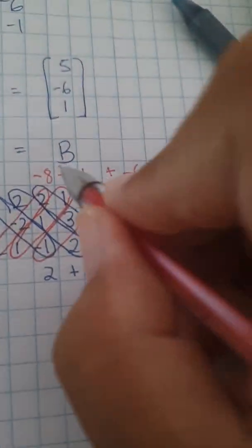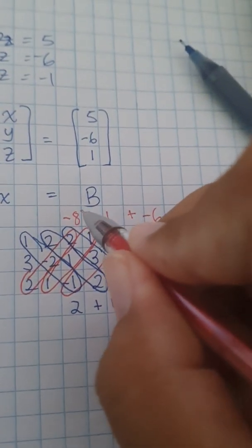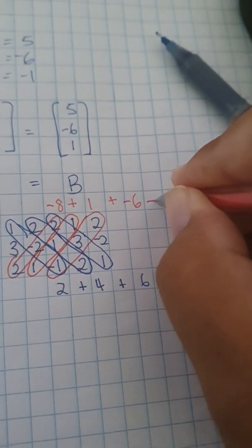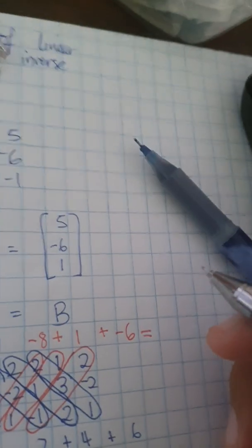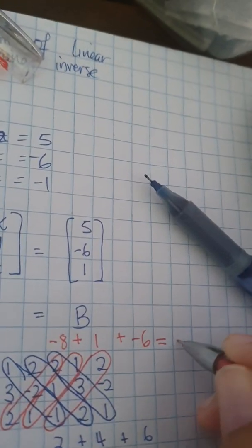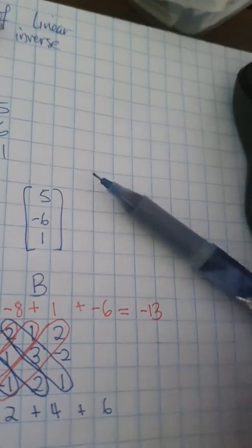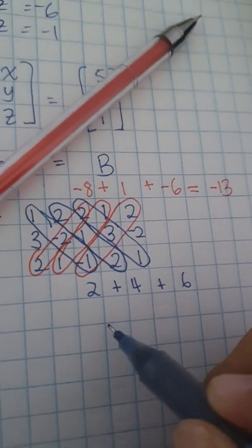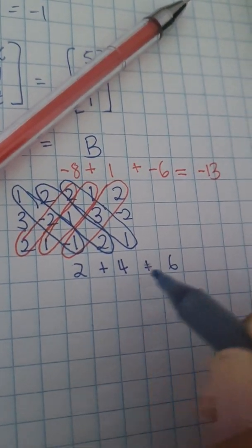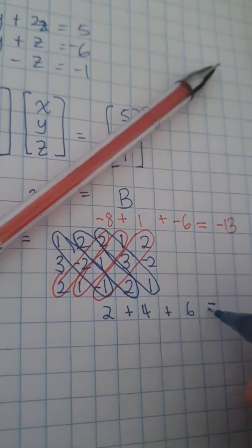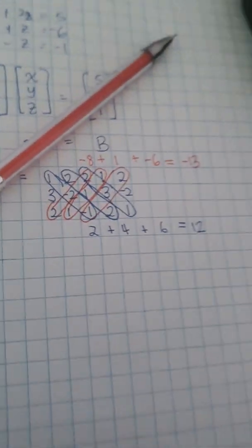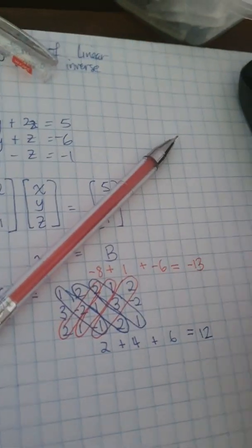you're adding now. So for here, negative 8 plus 1 minus 6, that gives you negative 13. For down here, we have 4 plus 2 plus 6, that gives you 12.